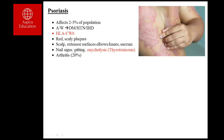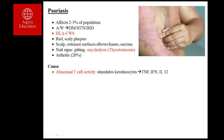About 20% of patients with psoriasis develop psoriatic arthritis. This belongs to a group of diseases known as seronegative spondyloarthropathy. They typically present with asymmetric peripheral arthritis, usually involving the distal interphalangeal joints. This will be discussed in more detail in rheumatology.